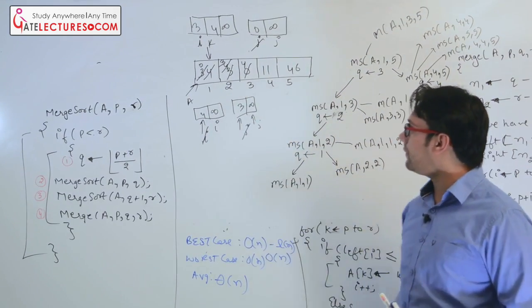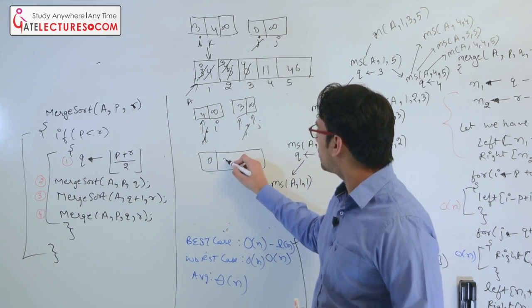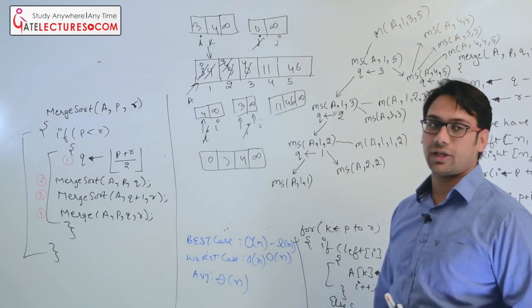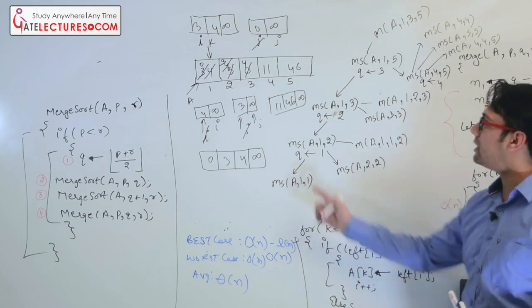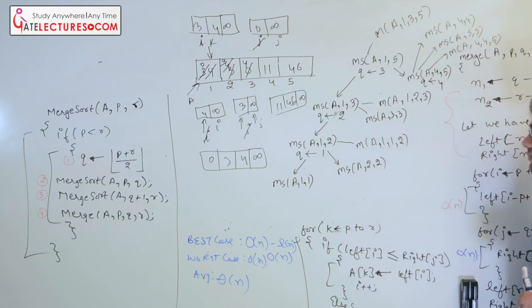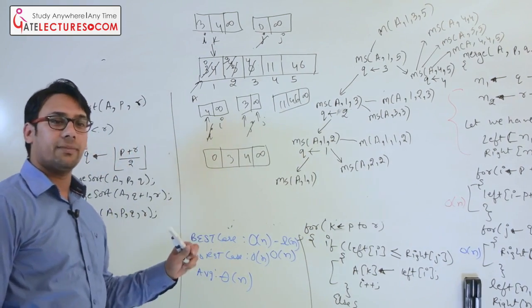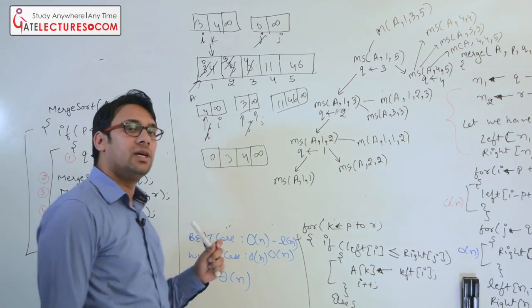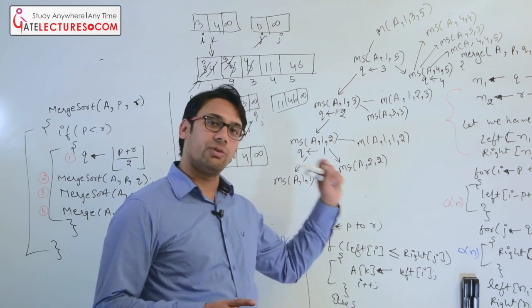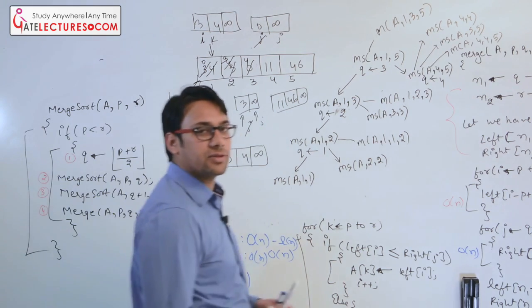In merge(A, 1, 3, 5): we copy data from index 1 to 3 — that is 0, 3, 4 — into the left array with infinity, and data from index 4 to 5 — that is 11, 46 — into the right array with infinity. Then we copy everything back in sorted order. The complete array is now sorted: 0, 3, 4, 11, 46. This is the merge sort algorithm. Now let us discuss the time complexity of this merge sort algorithm.